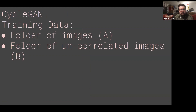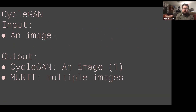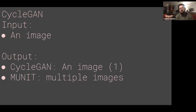Similar to Pix2Pix, the training data for this is two folders. One folder is a set of images called A — that would be like horses — and the other is a folder of images called B, which is zebras in this case. Once you've trained CycleGAN or MUNIT on all this data, when you test it you give it a single new image — a horse image it's never seen, or a zebra image — and depending on the direction, you're saying: do I want to convert this zebra to a horse, or this horse to a zebra.